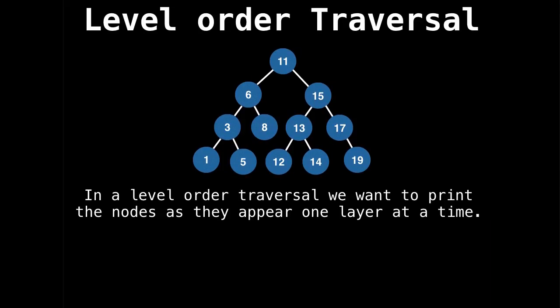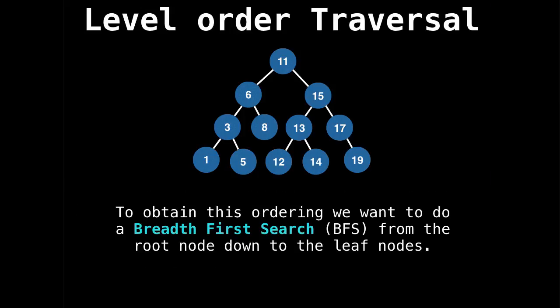A level order traversal is we want to print the nodes one layer at a time. So we start with 11, then we want to print 6 and 15, then 3, 8, 13, 17, and 1, 5, 12, 14, and 19. And you're like, how am I going to do that? And the way we're going to obtain this ordering is by doing something called a breadth-first search, from the root node all the way down to the leaf node. So if you know what a breadth-first search is from graph theory, this is the same thing. A tree is a type of graph, it's no different.